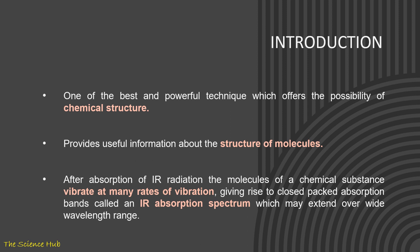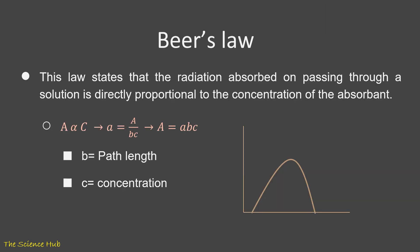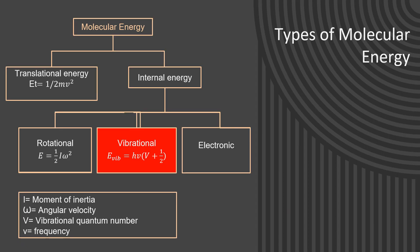As we all know, absorption depends on Beer's law in spectroscopy. This law states that radiation absorbed on passing through a solution is directly proportional to the concentration of the absorbent. So A is proportional to C, means absorption is directly proportional to concentration. Absorption totally depends on the concentration of a particular substance.